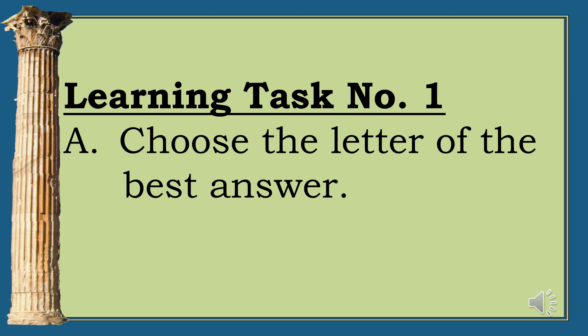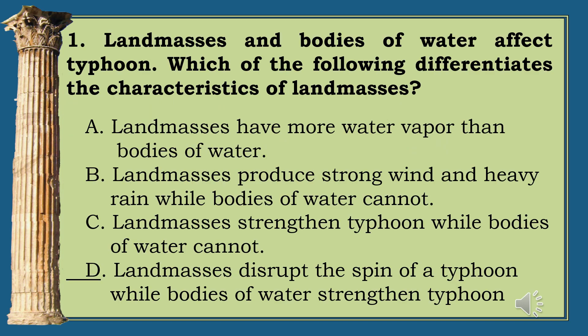Learning Task 1A. Choose the letter of the best answer. Question 1: Land masses and bodies of water affect typhoons. Which of the following differentiates the characteristics of land masses? A. Land masses have more water vapor than bodies of water. B. Land masses produce strong wind and heavy rain while bodies of water cannot. C. Land masses strengthen typhoons while bodies of water cannot. D. Land masses disrupt the spin of a typhoon while bodies of water strengthen it.